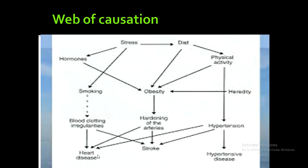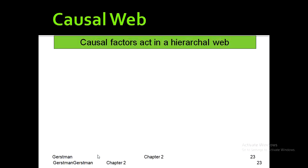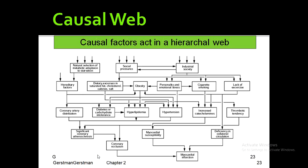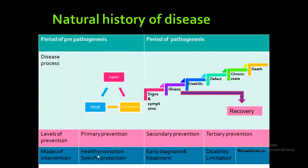The web of causation for myocardial infarction similarly involves multiple interlinked factors. Regarding the natural history of disease: from the pre-pathogenesis stage or stage of susceptibility, there is a complex interaction of agent, host, and environment. Disease then occurs with development of signs and symptoms, which can progress to illness, disability, chronic state, death, or recovery, with different levels of prevention applied at each step.